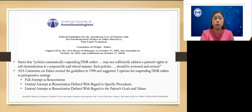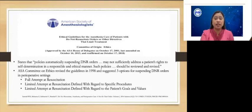In 2001, 2008, and October 2013, the ASA published the ethical guidelines for anesthesia care of patients with do-not-resuscitate orders or other directives that limit treatment. It states that policies automatically suspending DNR orders may not sufficiently address a patient's rights to self-determination in a responsible and ethical manner, and that such policies should be reviewed and revised. The guidelines suggested three options for suspending DNR orders in perioperative settings: first, full attempt at resuscitation; second, limited attempt at resuscitation defined with regard to specific procedures; and third, limited attempt at resuscitation defined with regard to the patient's goals and values.